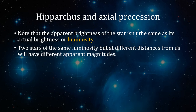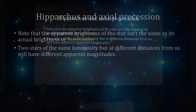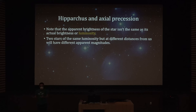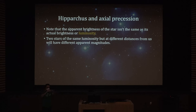It's important to understand that the apparent brightness of a star — how it looks to us when we look at the sky — isn't the same as its actual brightness, which we call luminosity. Two stars of the same luminosity but at different distances from us will have different apparent magnitudes. The farther away a star is, the less bright it will look, because light expands in a sphere away from the star. The surface area of that sphere keeps growing, so the farther you are, the less light you receive.